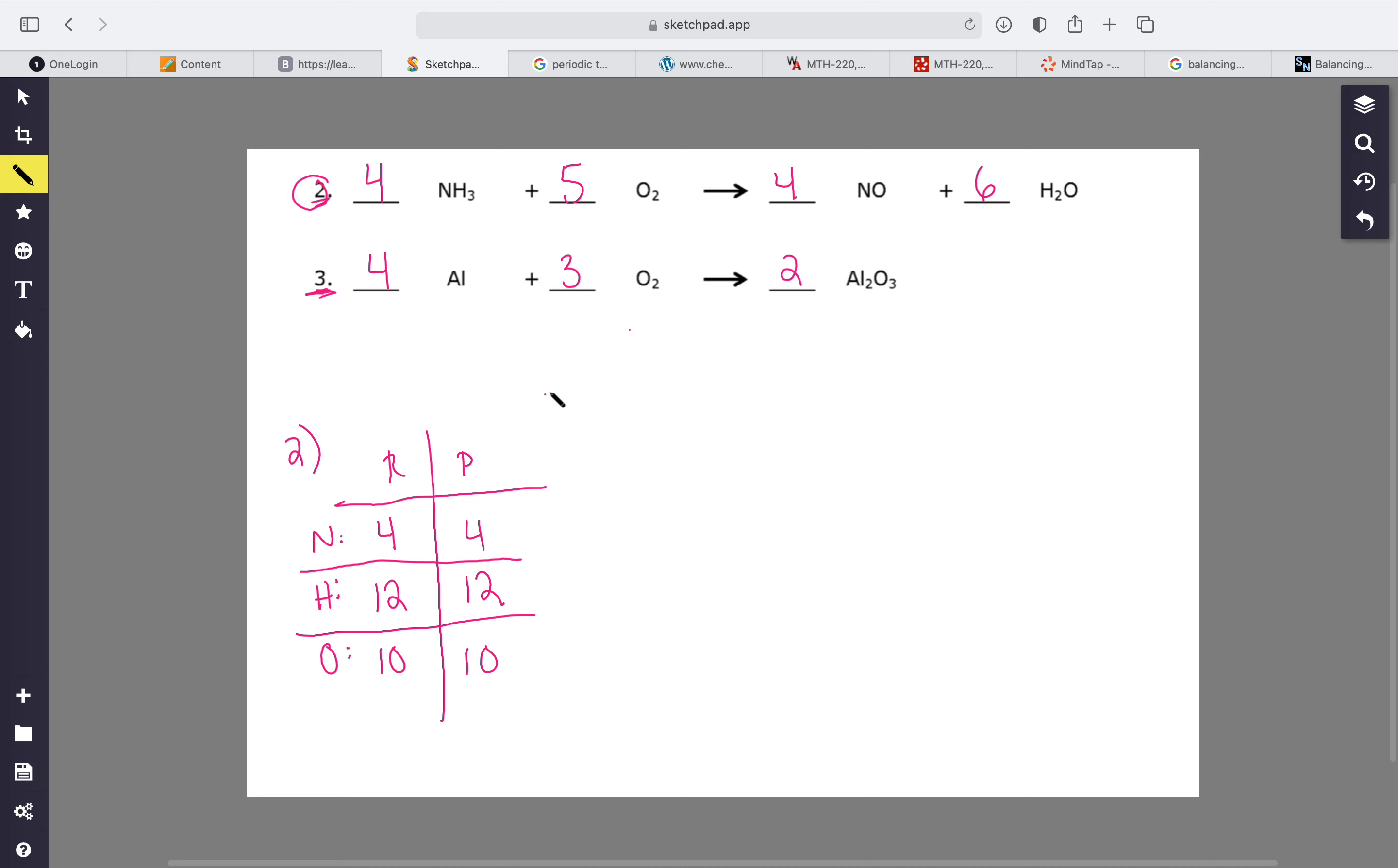So that would be the correct answer. Let's say for instance if you were to get something like eight, ten, eight, and twelve, you would just divide all of those by two in order to get the simplest number, so you would end up with four, five, four, and six.